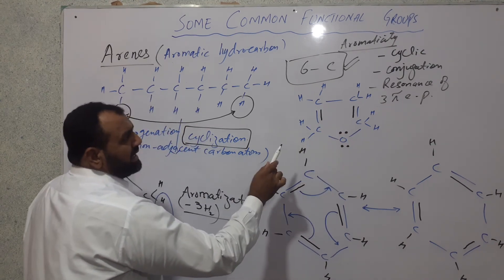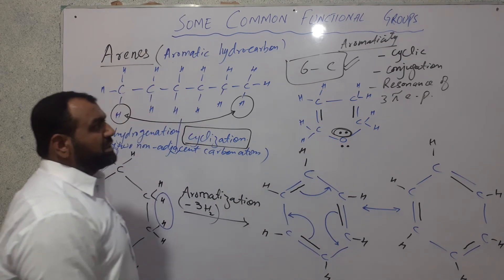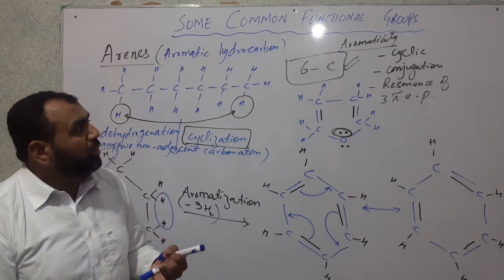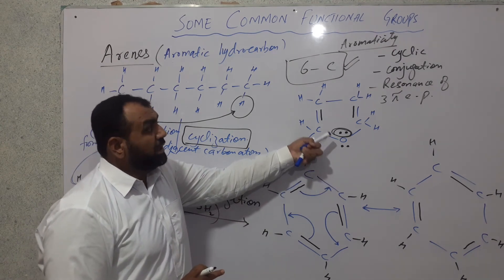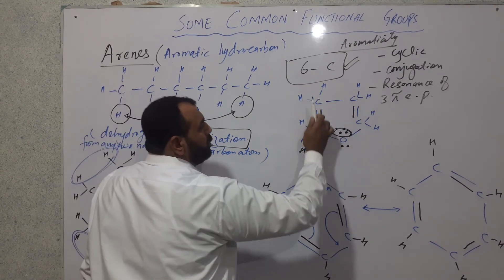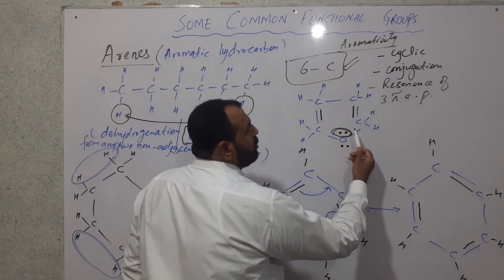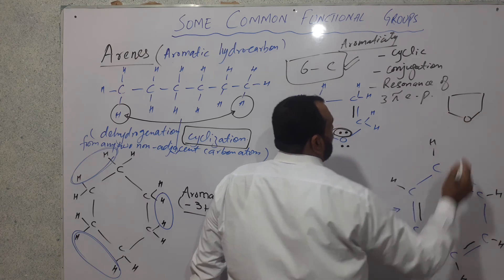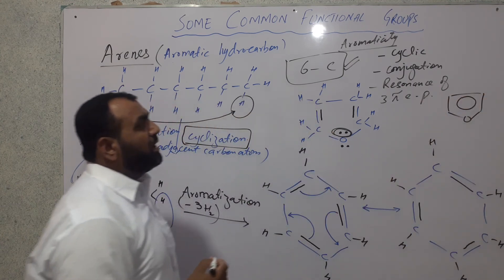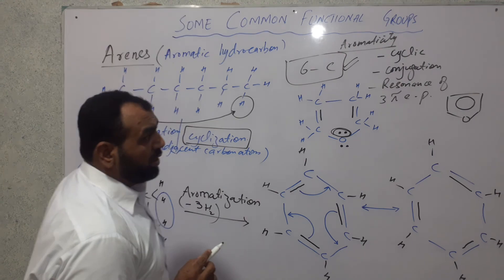When we propagate resonance in that structure, the lone pair on oxygen also becomes available for resonance. The condition for resonance is: a pi bond in conjugation with another pi bond, or a pi bond in conjugation with a lone pair. Here the lone pair is also involved in conjugation, fulfilling the resonance condition. This compound — with two pi bonds and one oxygen lone pair — can also show resonance and is called aromatic. The circle in the cyclic structure represents the resonating pi electrons in an aromatic hydrocarbon.